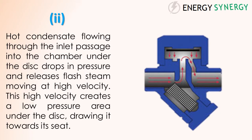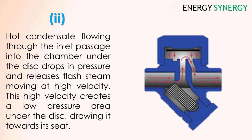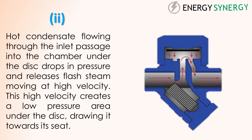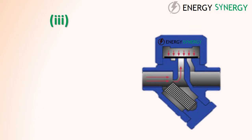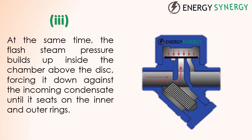Stage two: hot condensate flowing through the inlet passage into the chamber under the disc drops in pressure and releases flash steam moving at high velocity. This high velocity creates a low pressure area under the disc, drawing it towards the seat. At the same time, flash steam pressure builds up inside the chamber above the disc, forcing it down.